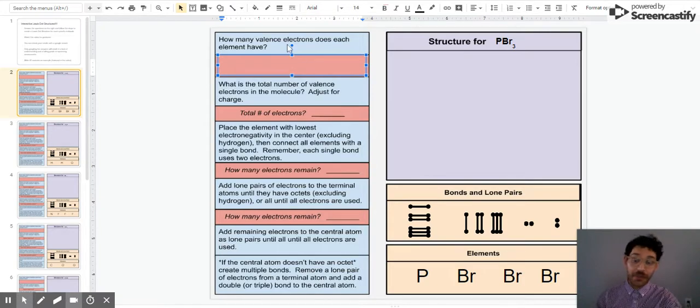The first question is over here. We have different questions or prompts in light blue and we're going to respond to those in the red section or on our drawing area. We want to know how many valence electrons does each element in this molecule have. We've got phosphorus and bromine. I can use the periodic table to identify that phosphorus has five valence electrons and bromine has seven valence electrons because of which group they are in.